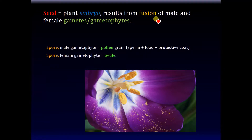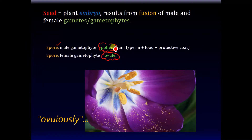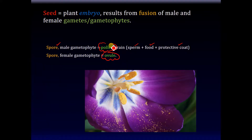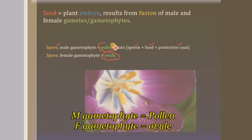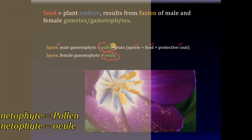It results from the fusion of the male and female gametes — the sperm and egg — which come from the male and female gametophytes. In seed plants, the male gametophyte, the male spore, is called the pollen, and the female gametophyte, the female spore, is called the ovule. The pollen grain includes the sperm, the food that it needs for its journey, and a protective coating. So the male gametophyte in seed plants is called the pollen grain, and the female gametophyte in seed plants is called the ovule.